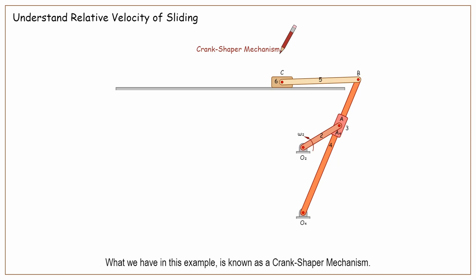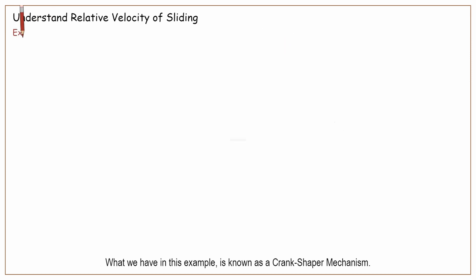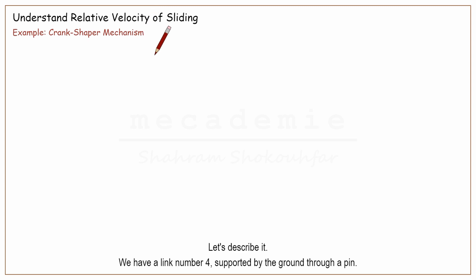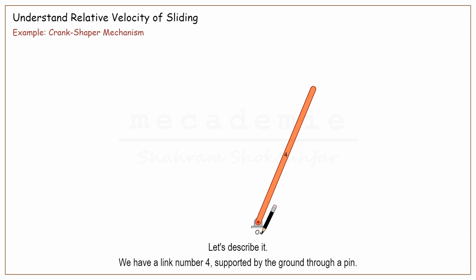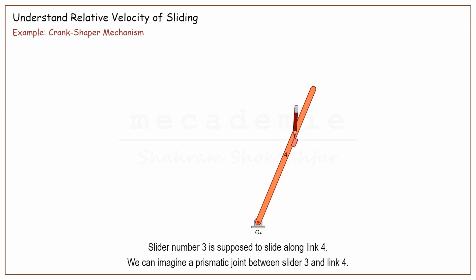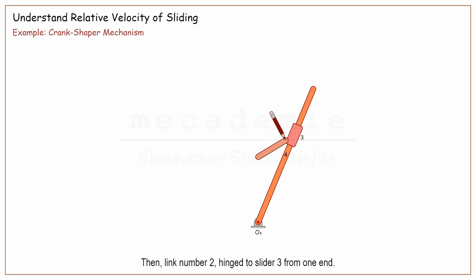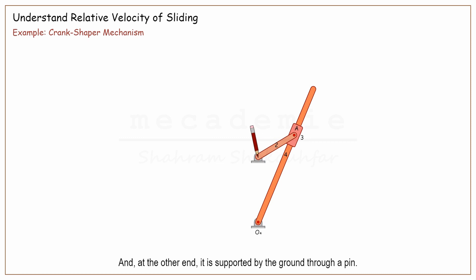What we have in this example is known as a crank shaper mechanism. We have a link number 4 supported by the ground through a pin. Slider number 3 is supposed to slide along link 4, and we can imagine a prismatic joint between slider 3 and link 4. Then link number 2 is hinged to slider 3 from one end, and at the other end it is supported by the ground through a pin.